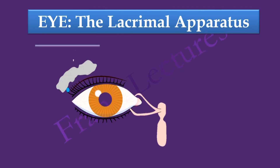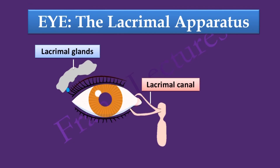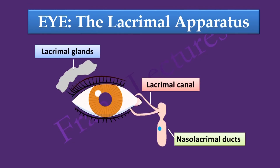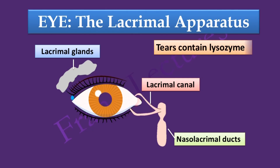In the human eye, the lacrimal glands secrete tears. These tears keep the conjunctiva of the eye moist, preventing microbes from settling on the surface of the eye. Tears also contain lysozyme, which is antimicrobial in action.